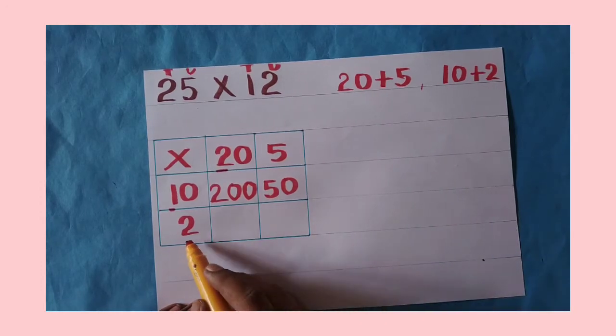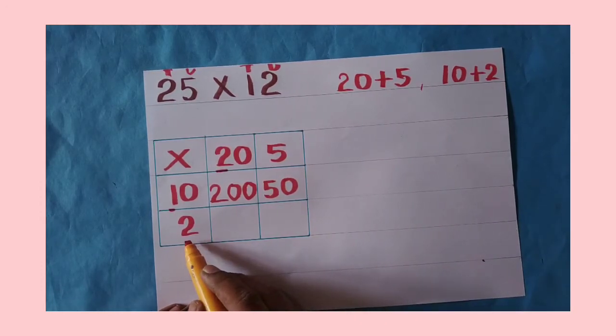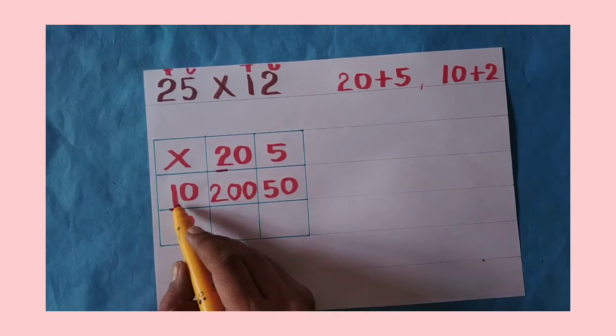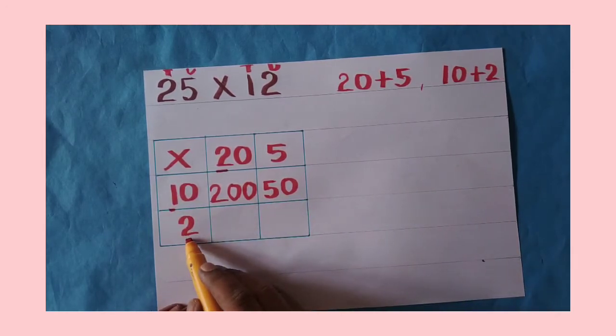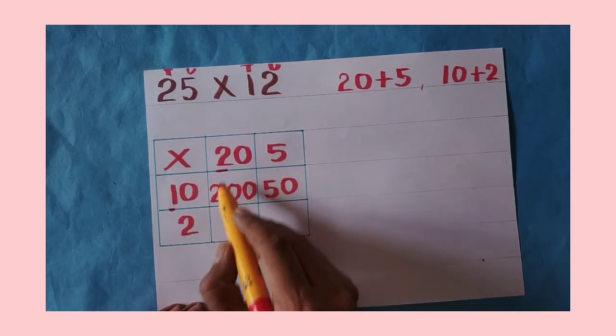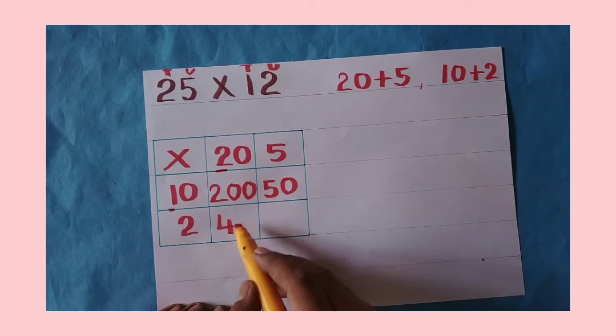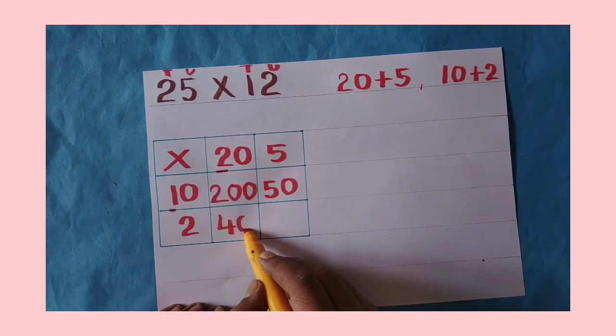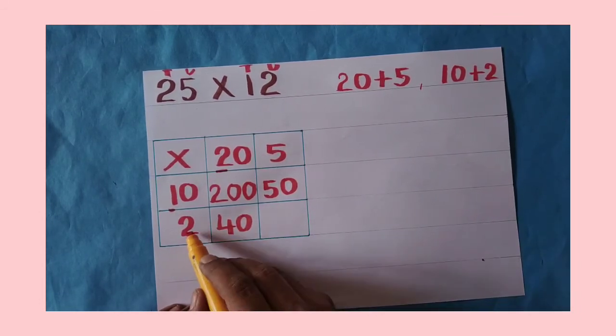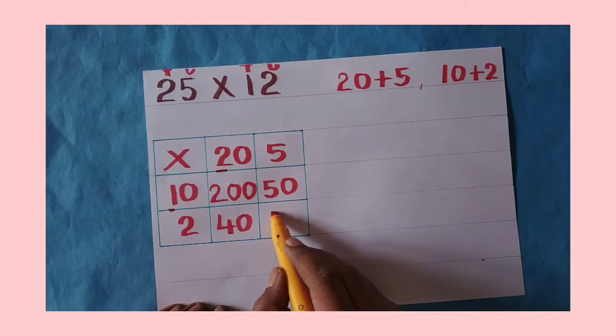After that, this 2, we need to multiply with this also. We are multiplying by 12, so 10 is done, now take 2. 2 times 2 is 4, and here is zero, so write zero here as well. Then 2 times 5 is 10.